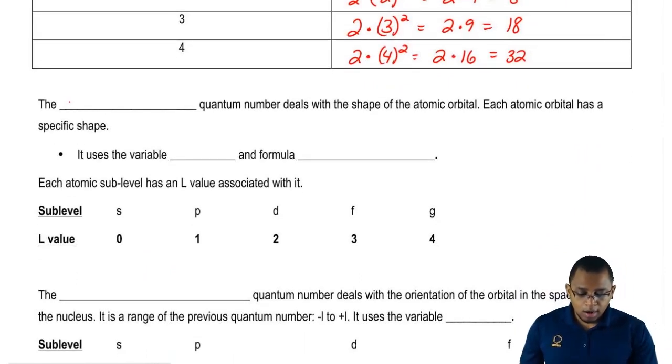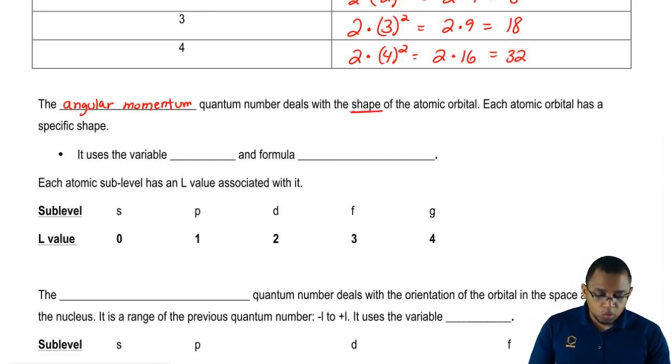The next one is called our angular momentum quantum number. This one deals with the shape, so remember, this one deals with the shape of the atomic orbital.